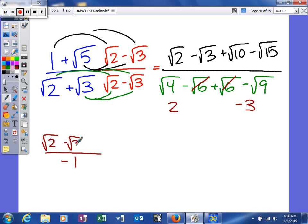And then our numerator won't change, in this case. And then, just like the last one, we're actually going to take the denominator and divide it into each of the terms. So our final answer would be negative the square root of 2, plus the square root of 3, minus the square root of 10, and then plus the square root of 15.